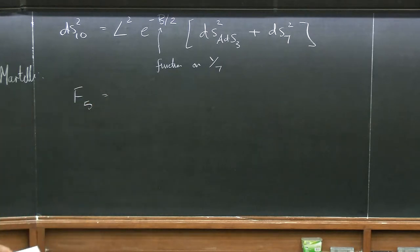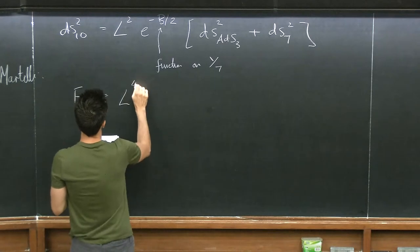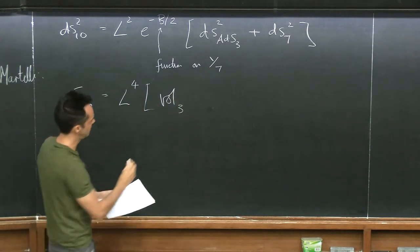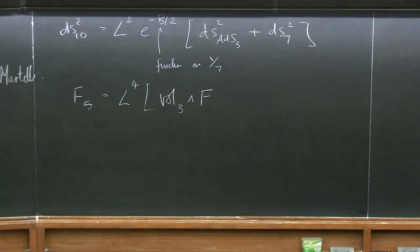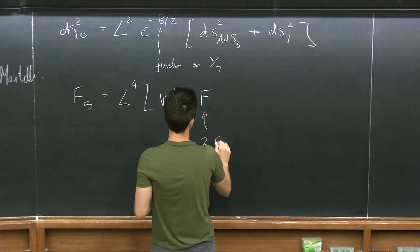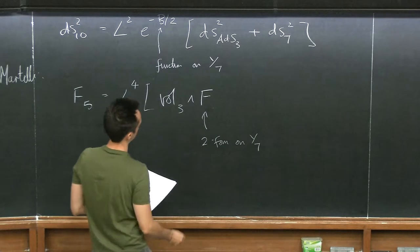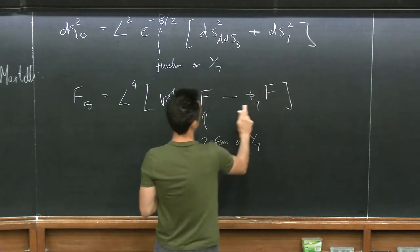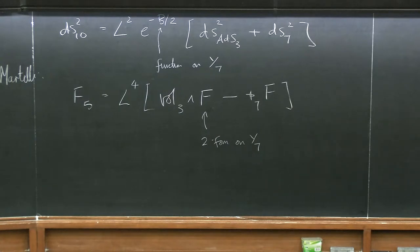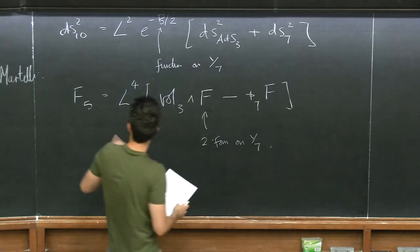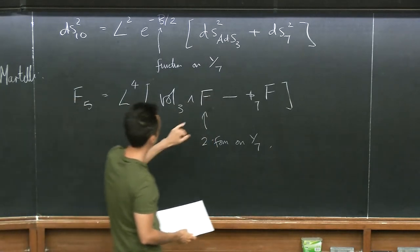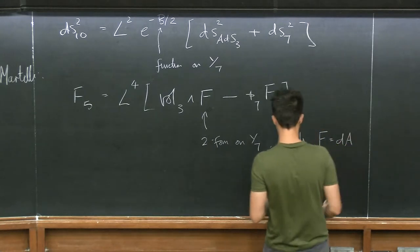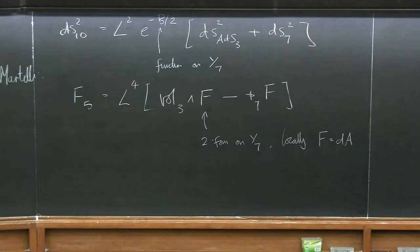The only other field turned on in Type IIB is going to be the 5-form. There's a dimensional factor L⁴, then the volume form on ADS3 wedged with a 2-form F on Y7, made self-dual by taking minus the Hodge dual with respect to the 7-manifold. The 5-form needs to be closed in Type IIB, so F is also closed and locally I can write it as dA. This class of Type IIB backgrounds was first considered by Kim around 2005.